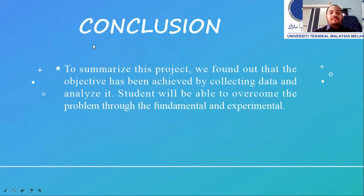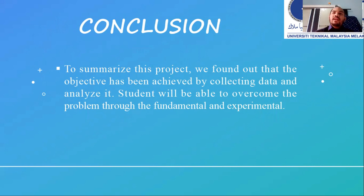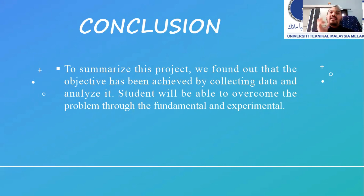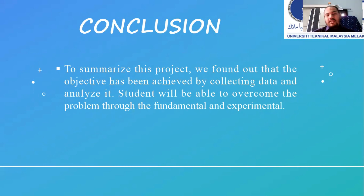For the conclusion, to summarize this project, we found that the objectives have been achieved by collecting data and analyzing it. Students will be able to overcome the problem through fundamental and experimental approaches. The conclusion is to obtain the non-dendritic microstructure, determining which variables — angle, length, and pouring temperature — need to be measured, and what software to use. We use Minitab to analyze the data so that we know the average suitable variable for developing non-dendritic microstructure using the spiral channel, made of mild steel that can sustain the hot temperature of approximately 630 degrees Celsius.